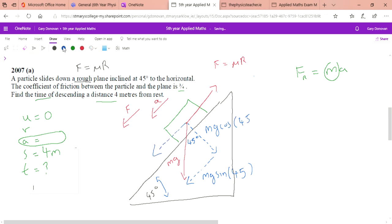This mg sine of 45, we could redraw it up here, that's the forward force pulling it down. To calculate friction we need to know the normal reaction force. The normal reaction force is going to be equal to mg cos 45. Those two forces will be equal because the particle isn't moving in this direction. Our friction then is going to be 3 over 4 mg cos 45.